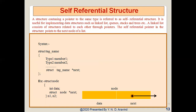A structure containing a pointer to the same type is referred to as a self-referential structure. It is useful for implementing data structures such as linked lists, queues, stacks and trees. A linked list consists of structures related to each other through pointers, and the self-referential pointer in the structure points to the next node of the list. In struct node, the first member is an integer item and the second is a pointer to the next node. Such structures which contain a member field that points to the same structure type are called self-referential structures.